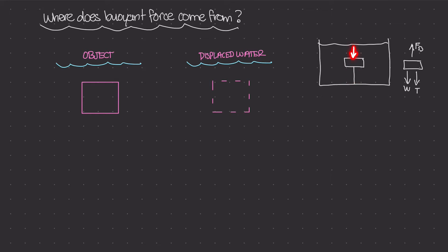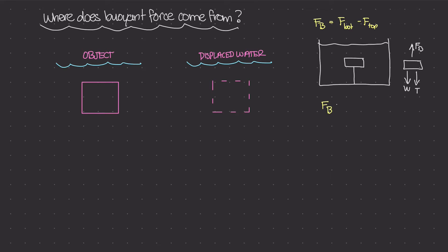This buoyant force F sub B is equal to the force at the bottom minus the force at the top. Those forces are due to the pressure at those surfaces times the area — pressure times area gives us force. In this video, I want to derive this buoyant force. In a lot of other videos I've been saying that the buoyant force F sub B is equal to the weight of the liquid displaced — in this case water, so W sub W. So the buoyant force equals the weight of the displaced water acting on the object. How do we get from here to there? That's what we're going to do in this video.